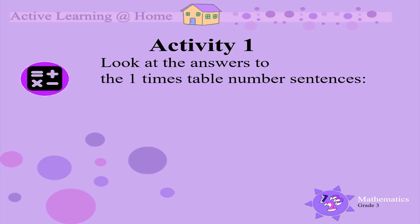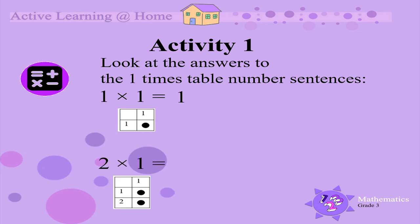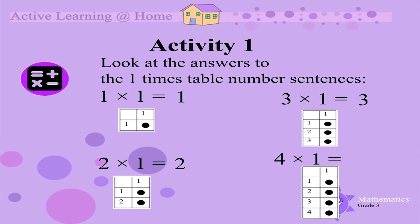Look at the answers to the one times table number sentences: one times one is one, two times one is two, three times one is three, and four times one is four. What do you notice about the answers? Can you see that the answer is the same as the number of groups?